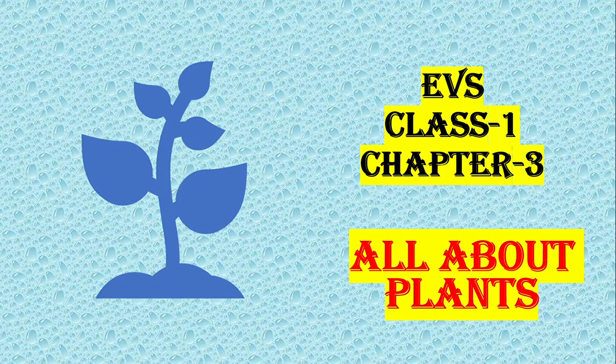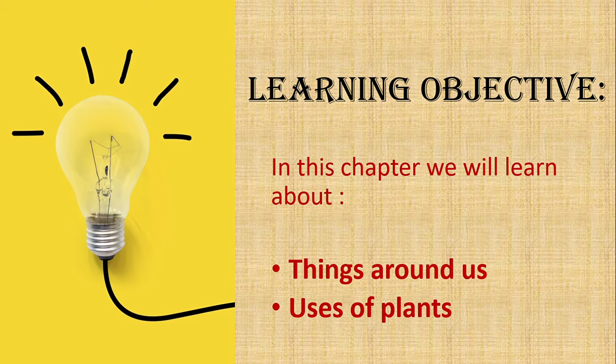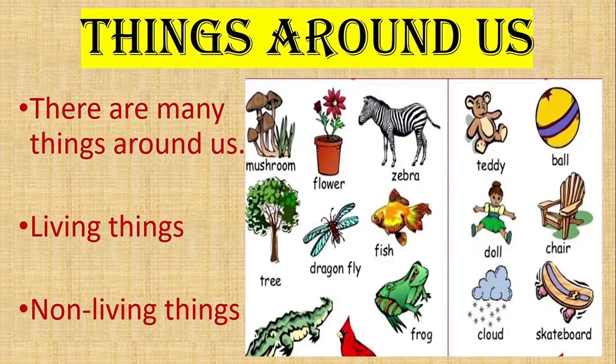EBS class 1, chapter 3: all about plants. In this topic we will learn about things around us and uses of plants. There are a variety of plants in this world; they are of different shapes, sizes, and also different types.